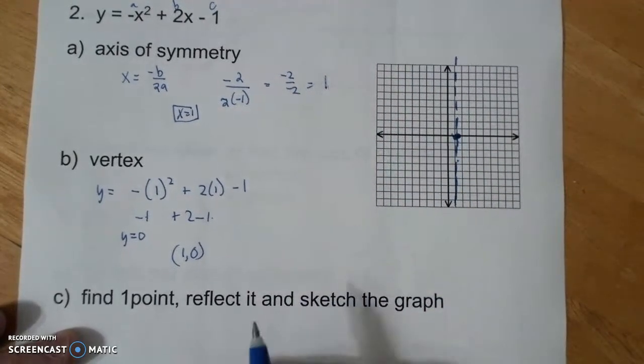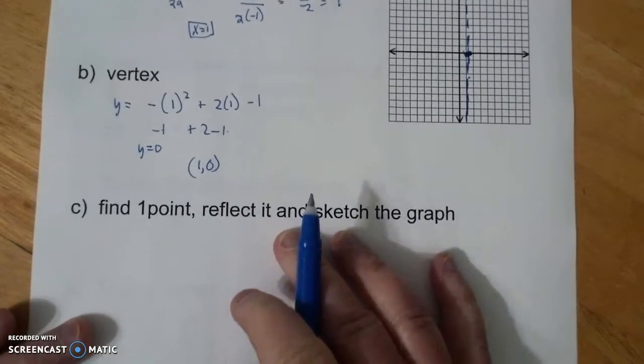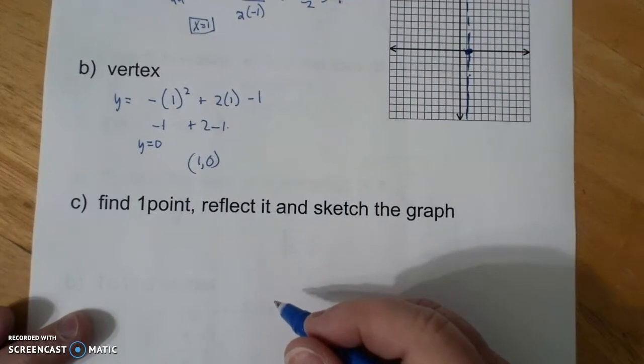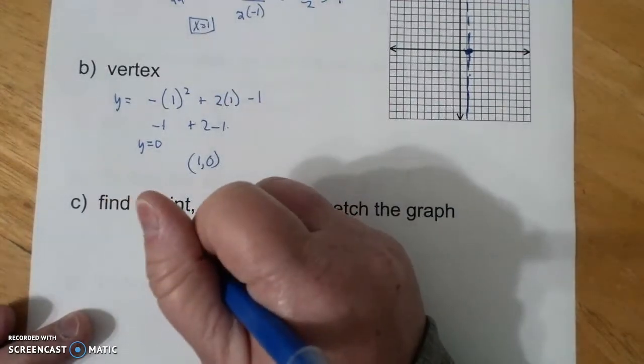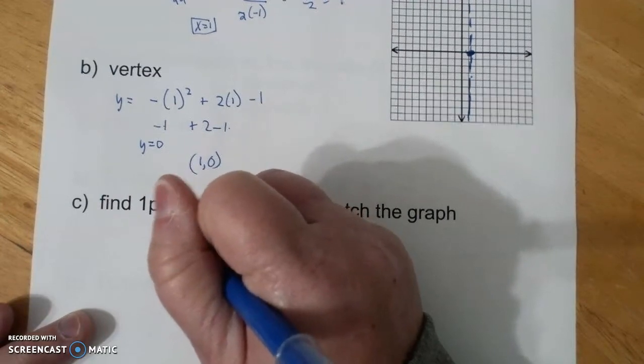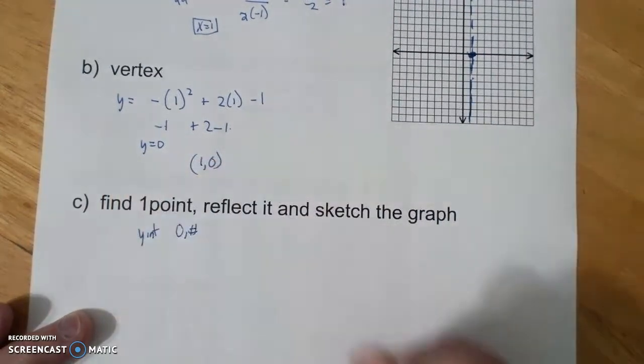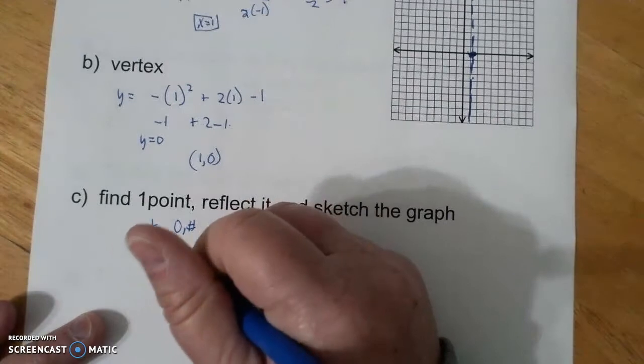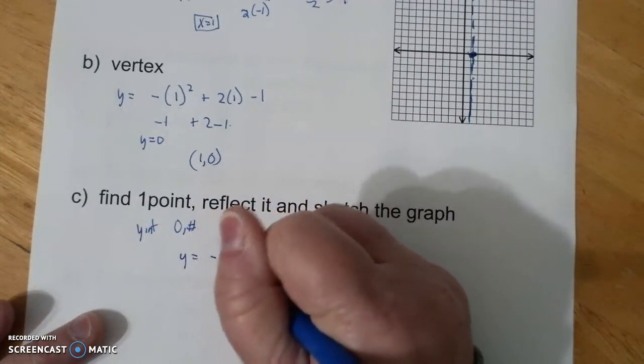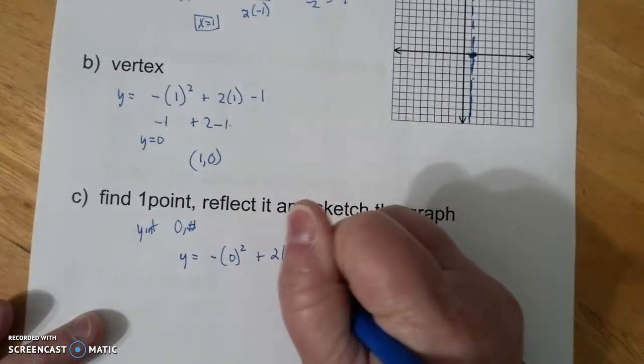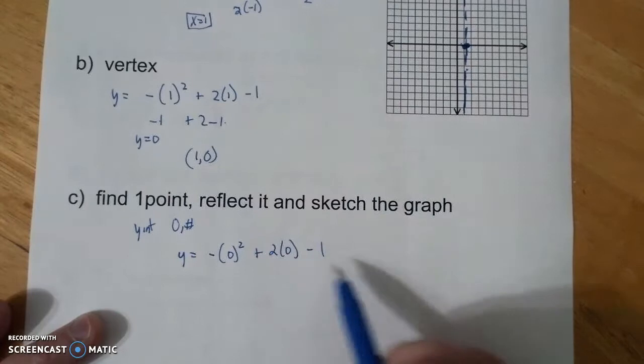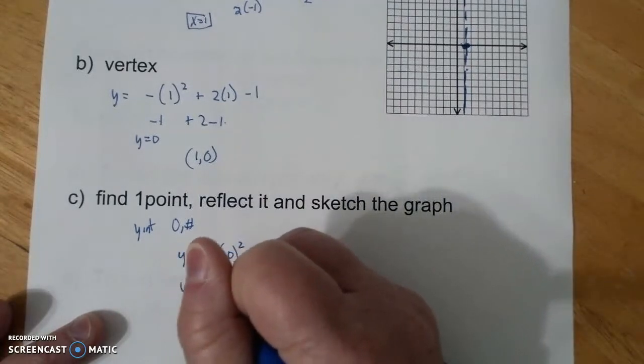And then I'm going to find one point. And I'm going to let, again, I like the y-intercept, 0 and a number. I like the y-intercept. It gives me a lot of information. And so I'm going to do y equals negative 0 squared plus 2 times 0 minus 1. It also is nice because a lot of things just disappear. So y equals negative 1.